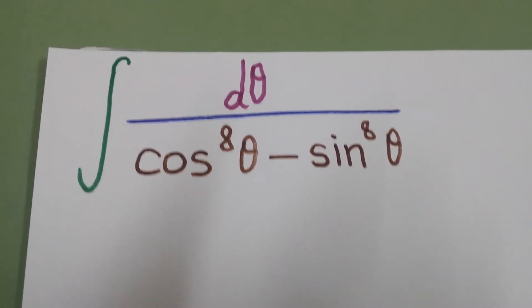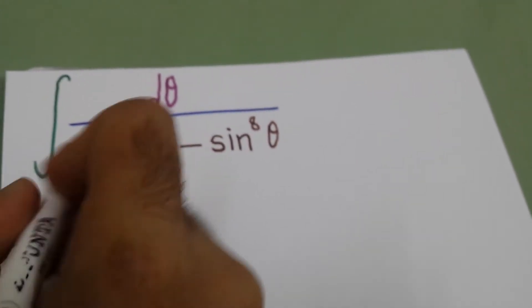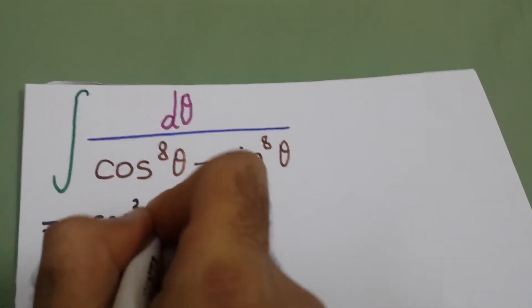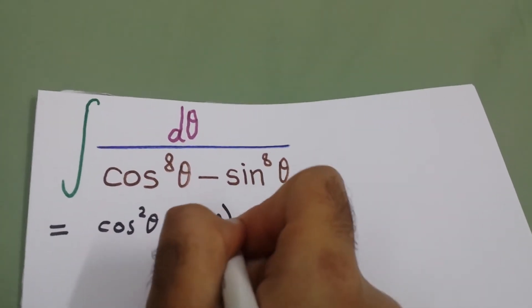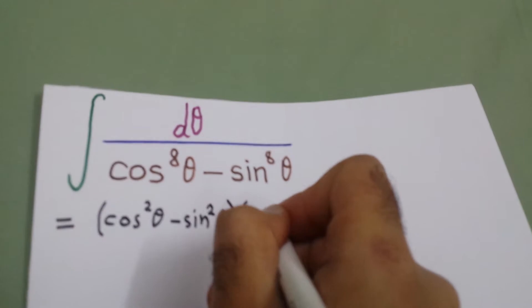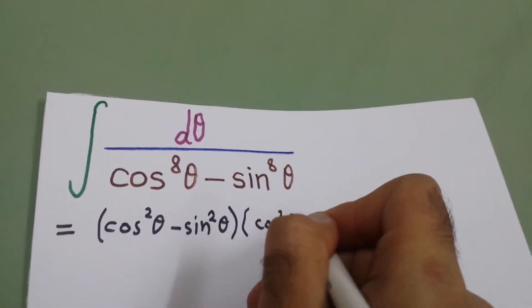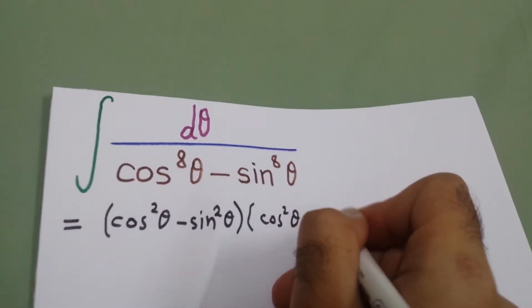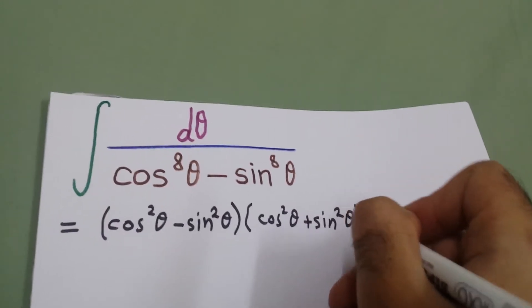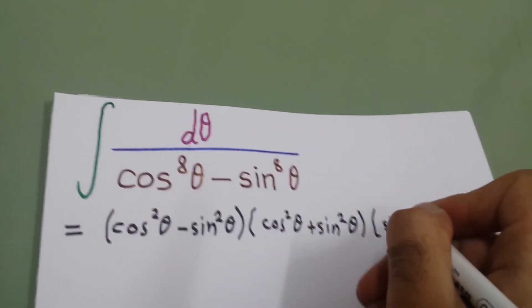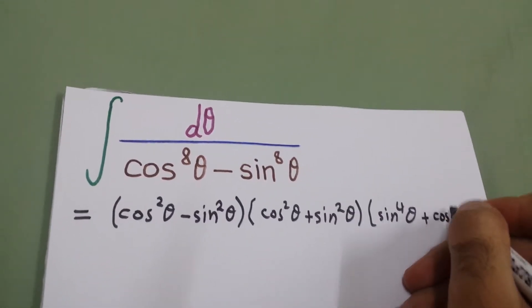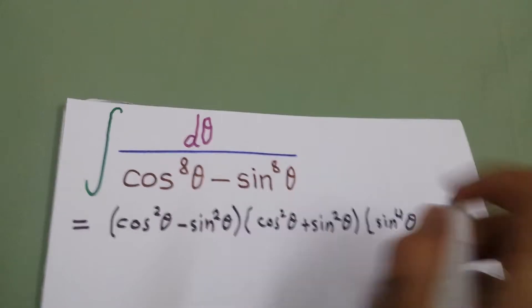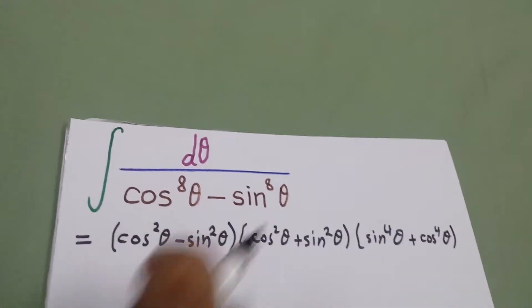First, we can write cosine to the power 8 minus sine to the power 8 as cosine squared minus sine squared, times cosine squared plus sine squared, times sine to the power 4 plus cosine to the power 4. We just factor this.